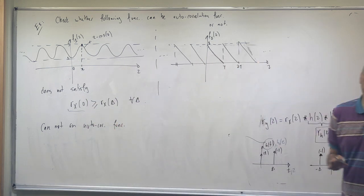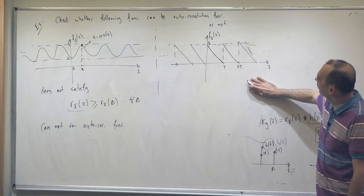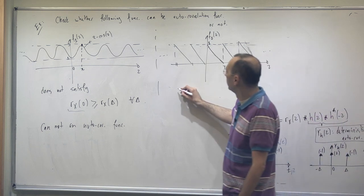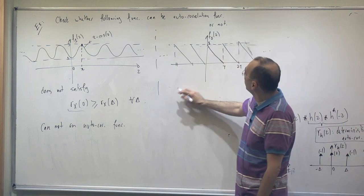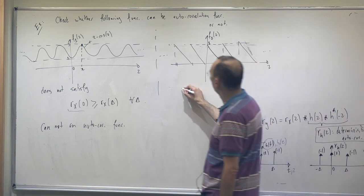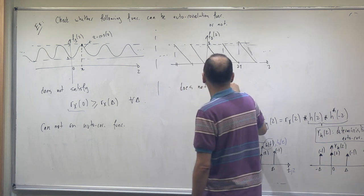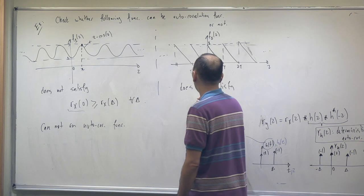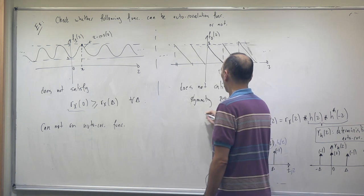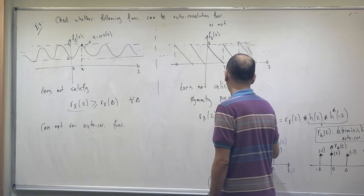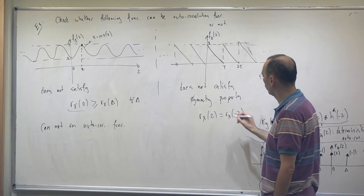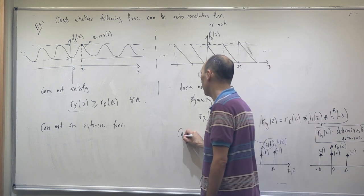Function two is a triangular-like function sketched on the board. It is not an even function, so it does not satisfy the symmetry property — that is, R_X(τ) must equal R_X(−τ) for real-valued processes. Therefore f2 cannot be an autocorrelation function either.